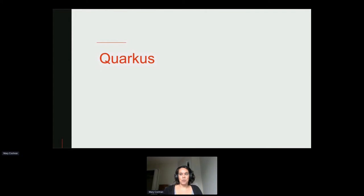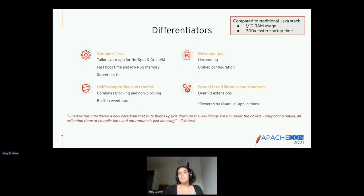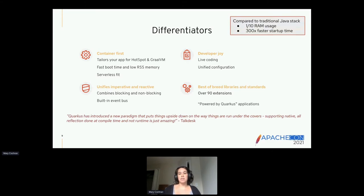Before we get into Camel K specifically, I also want to talk about Quarkus, which is the default runtime for Camel K. Quarkus is what we call supersonic subatomic Java — it's Java in the syntax we know and are used to, but with significantly less resource utilization, which leads to faster startup time and makes it a great fit for serverless technology. It can also be used with GraalVM, which can compile your code down to native — similar to the way it would work with C code — resulting in that smaller footprint.